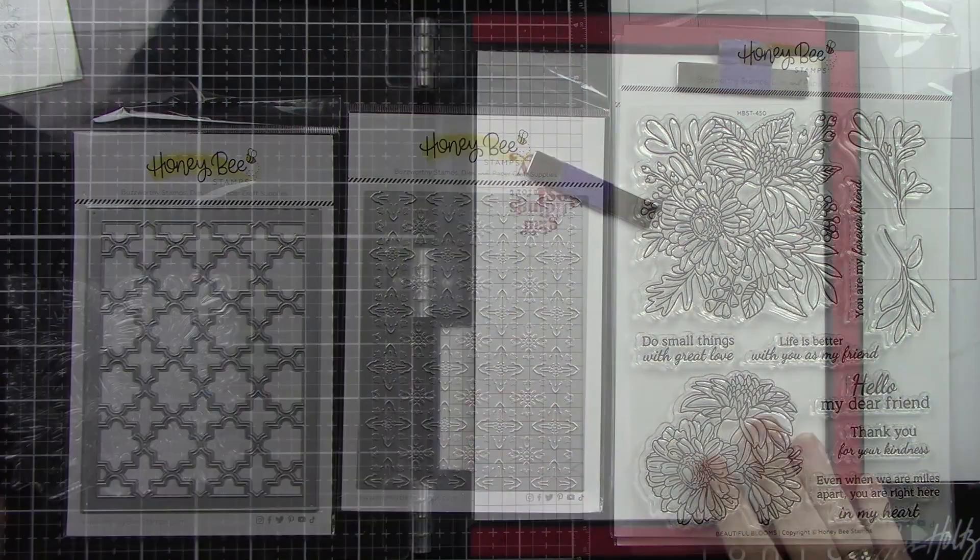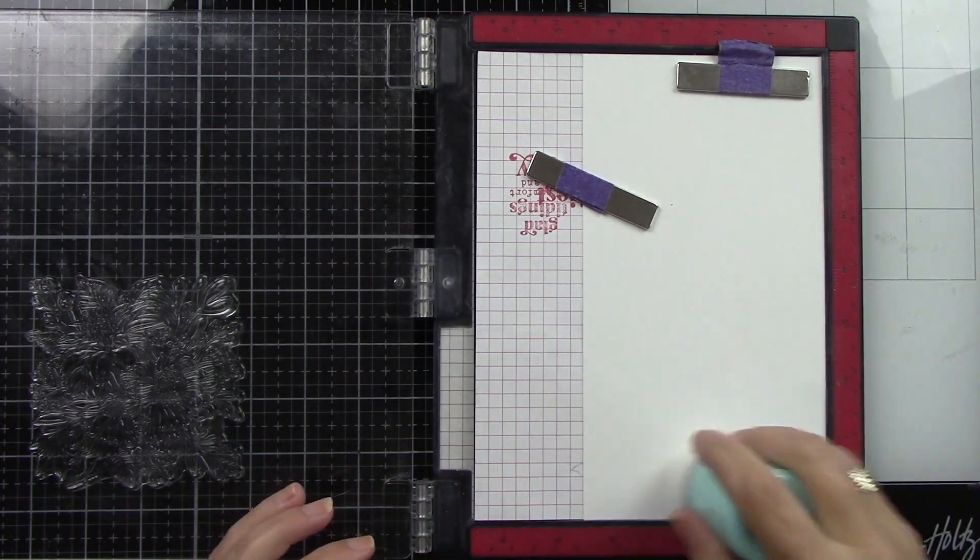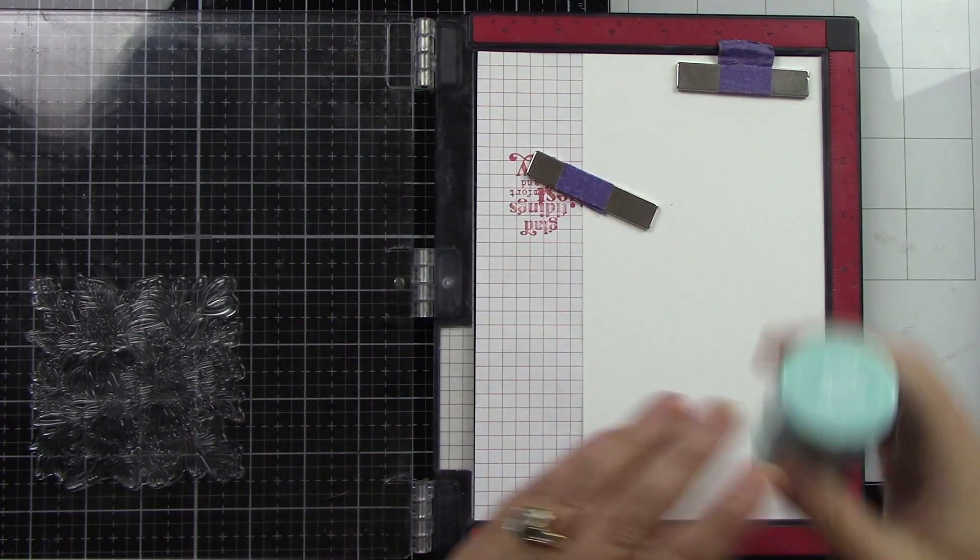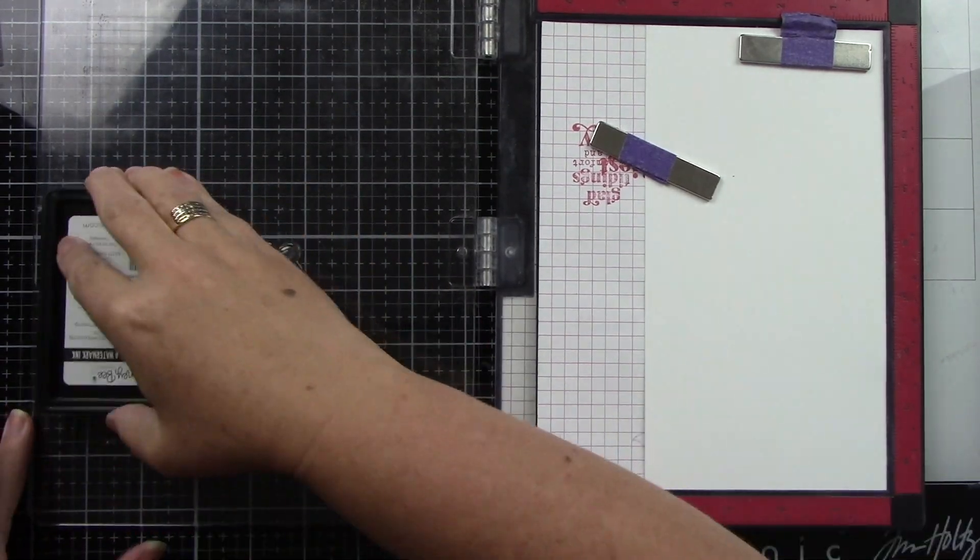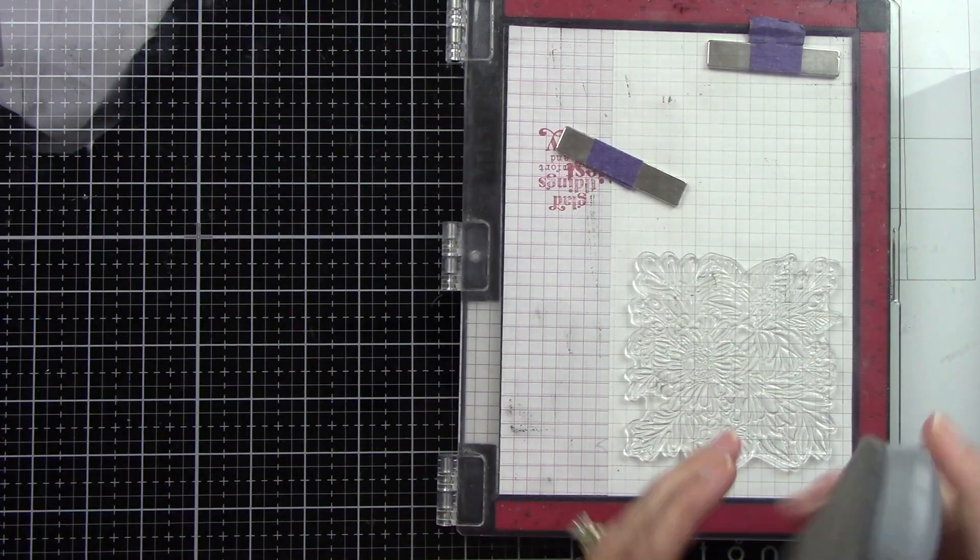Let's get our image stamped onto some white cardstock. We're going to do some gold embossing. I just thought these flowers would look gorgeous that way. I've prepped my cardstock with a powder tool.